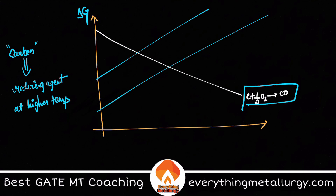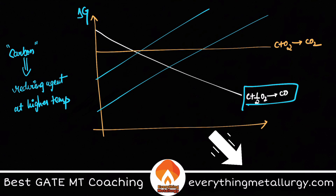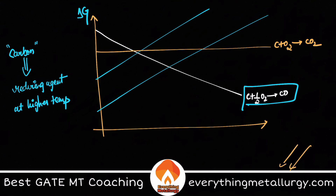You also have one more reaction with a horizontal line — the formation of CO2. Why does it form a straight line? Why does it have a negative slope? All these full details are discussed in our course. If you are interested, please check out everythingmetallurgy.com to get complete exposure for GATE metallurgy.